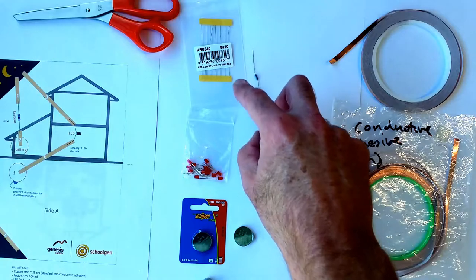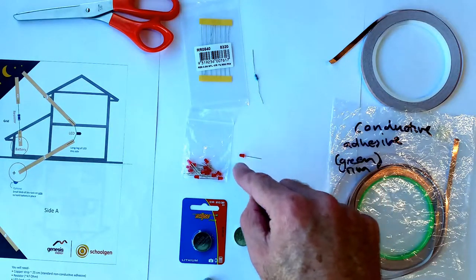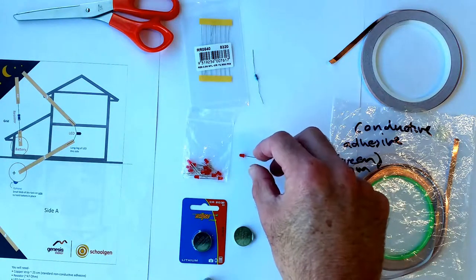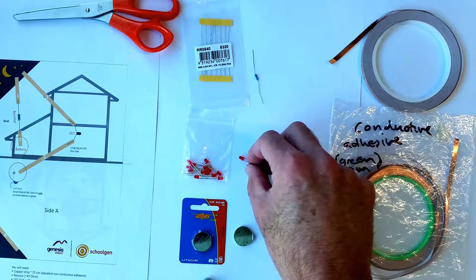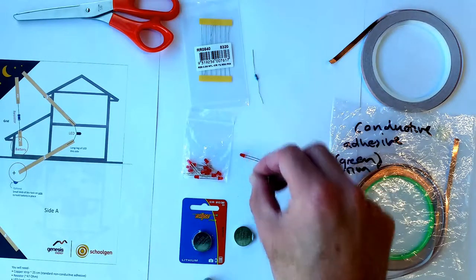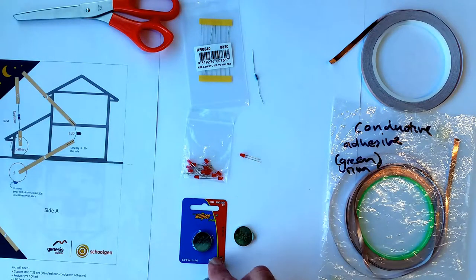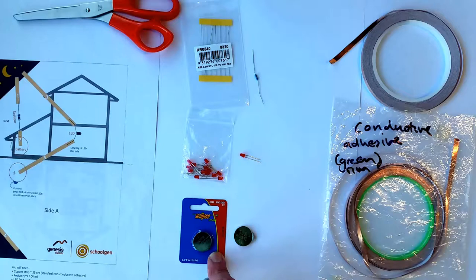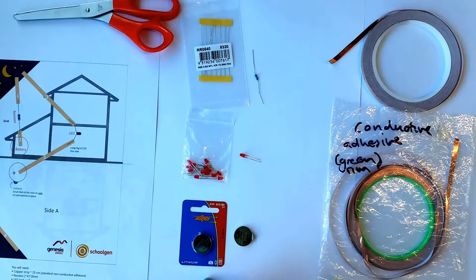Red, yellow, or green LEDs are really good and pretty cheap. We're going to use red LEDs today. You're going to need a coin battery—this is a CR2032 coin battery. It helps to have a little bit of blue tack. You just put a tiny blob on the side, and it helps hold it in place in the circuit.